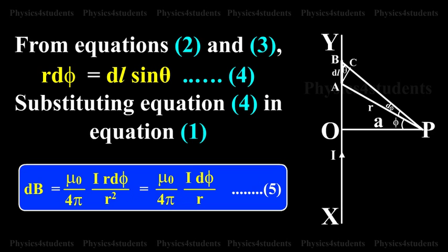Substituting equation 4 in equation 1, dB equals μ0 by 4π times I times R dφ by R squared equals μ0 by 4π times I times dφ by R. This is equation 5.